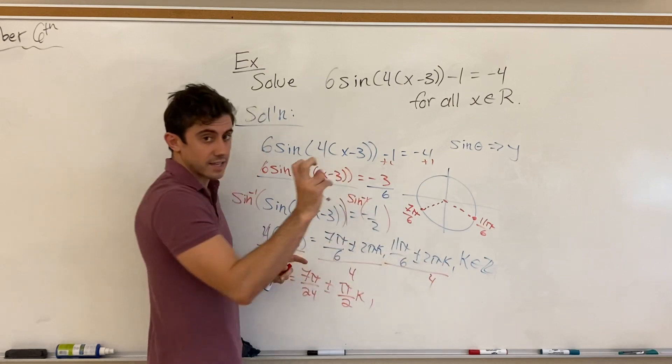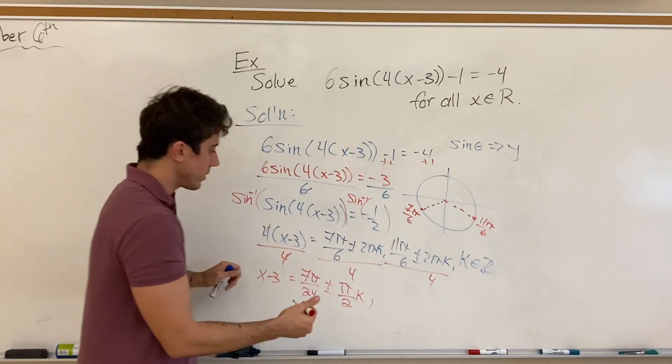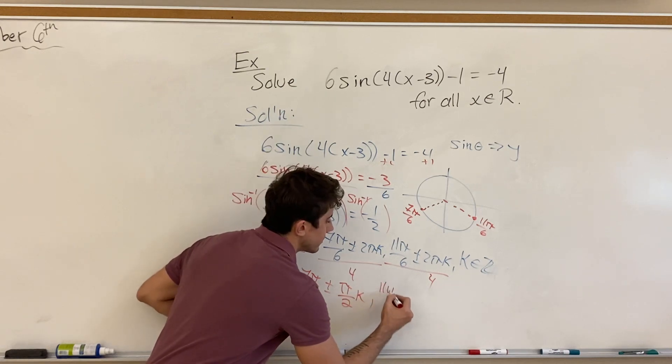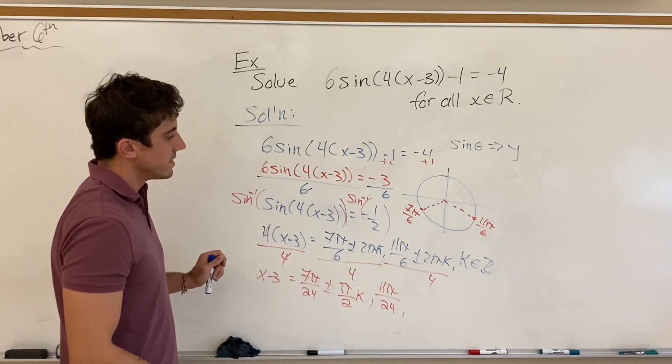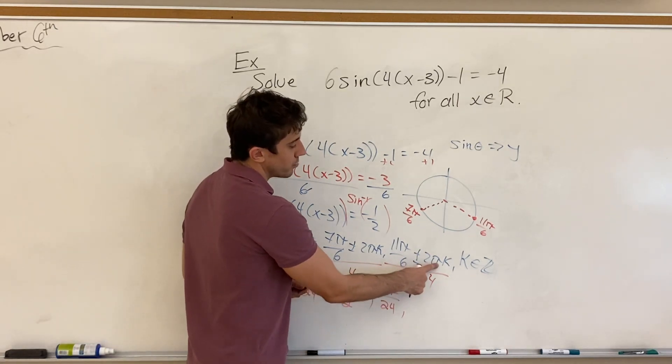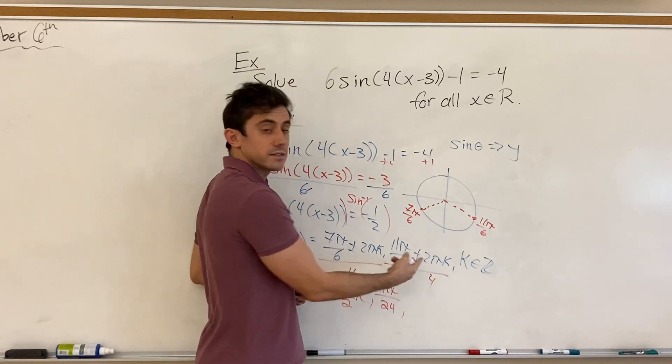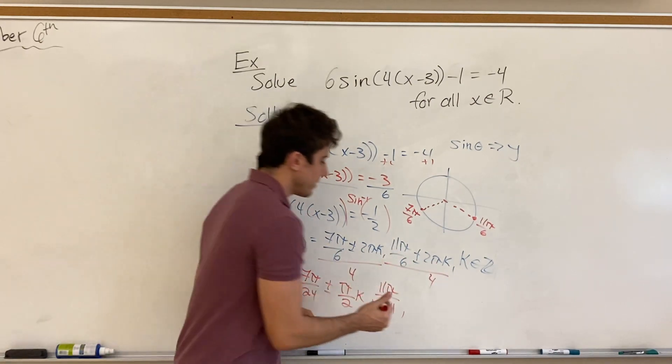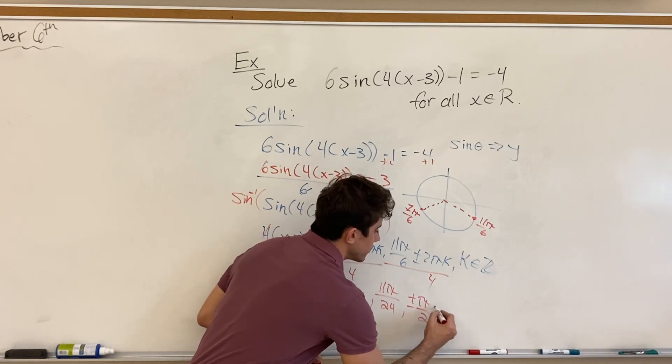And then for the second set of solutions, we'll have 11 pi over 6 all over 4, which brings us to 11 pi over 24. And we'll have plus or minus, again, 2 pi over 4 can simplify it out to pi over 2, still times some integer multiple of k. And so we'll again have plus or minus pi over 2 times k.